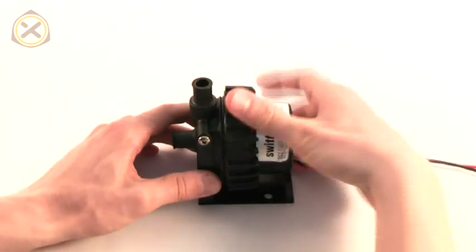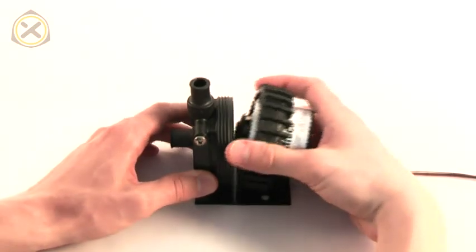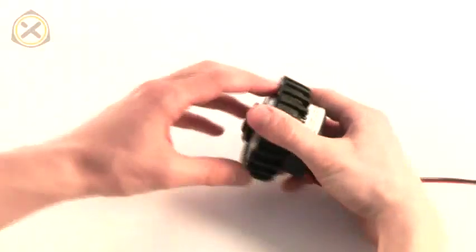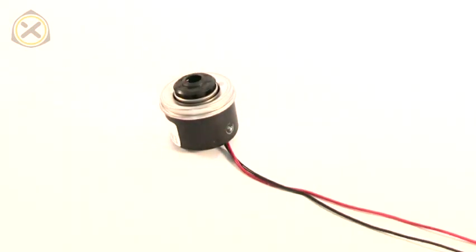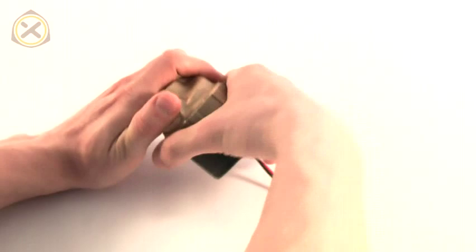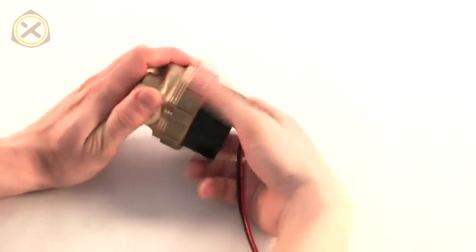First the original pump top needs to be removed. To do this, simply unscrew the back half of the top. For those who have the version with the metal top, it is disassembled the same way as the plastic top.